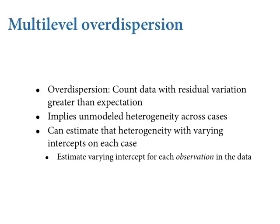The classic problem is that empirical count distributions, even after you condition on all the predictors, typically have variation in excess of what the likelihood expects. With count distributions, the variance scales with the mean - both for binomial and Poisson. You don't have a separate independent parameter like you do in the Gaussian. All the other distributions have variance and mean scaling together. Even after we condition on everything, there's excess variation - stuff we haven't measured that's creating diversity across cases. That's why there's over-dispersion.